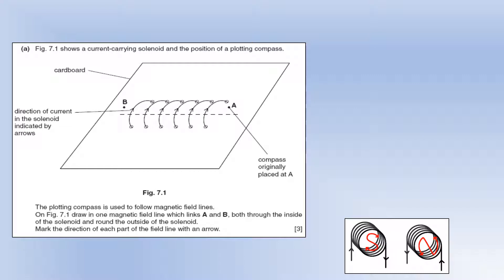The diagram shows a current carrying solenoid, or coil, that's just a fancy way of saying it, and the position of a plotting compass. We've got the indication of the direction of current in the coil. So you can see it's going, if we look from the end B, it's going sort of anti-clockwise around in loops.